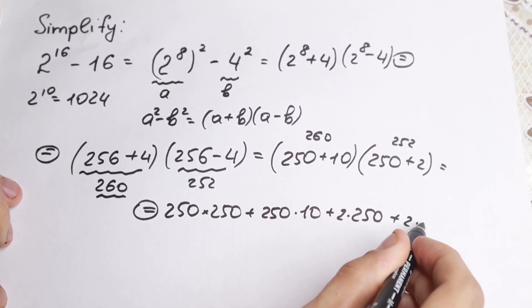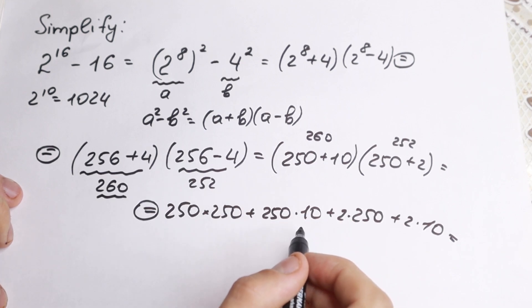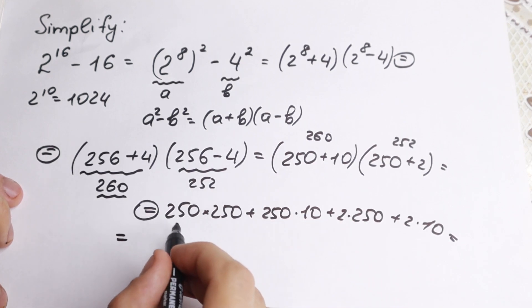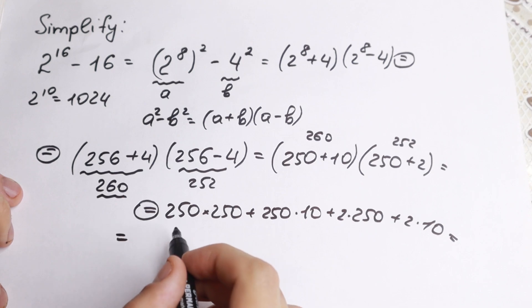As you can see, all of these elements are absolutely simple for us because 250 times 250 equals 62,500. This looks like 25 squared.